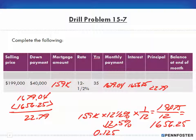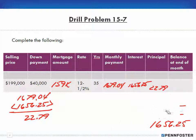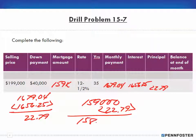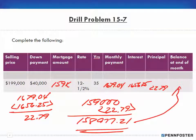The balance at the end of the month: we started with $159,000 as our beginning principal balance, paid off $22.79 in principal, so the remaining balance is $158,977.21. That's the amount of our balance at the end of the first month. That's all there is to it for these drill problems — the word problems are going to be the same type of thing, just more math, but the process is the same. I'll see you in the word problems.